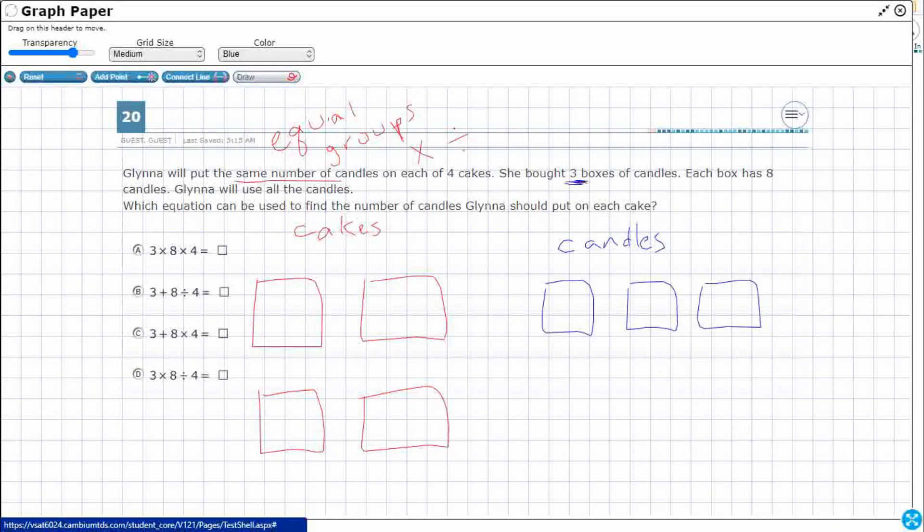Each box has eight candles. So you see that once again, these are equal groups. Once you're looking for equal groups, you'll start seeing equal groups all over the place because there's the same number in each.